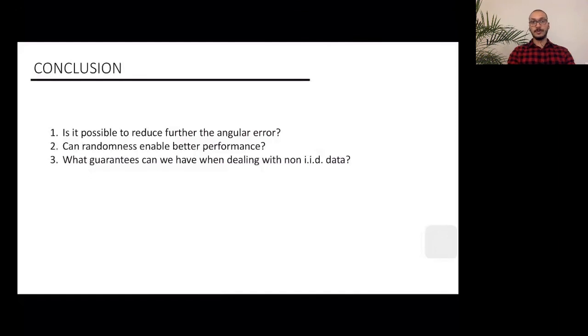As a conclusion, we are left with some open questions that will be addressed in the future work, like whether it is possible to reduce further the angular error and achieve maybe the error of averaging, or can randomness enable better performance? And what are the guarantees that we can have when dealing with non-IID data? So this was all. Thank you very much for your attention. If you have any questions, I will be glad to respond. Thank you.